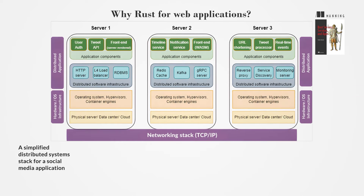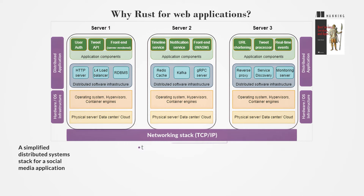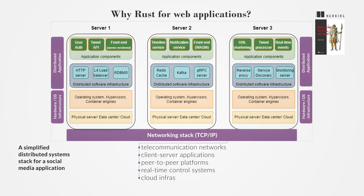Modern web applications are distributed systems with components that may run across multiple processors, communicating via networks and handling concurrent workloads. They include telecommunication networks, client-server applications, peer-to-peer platforms, real-time control systems, and cloud infrastructures.